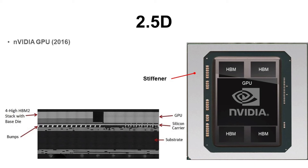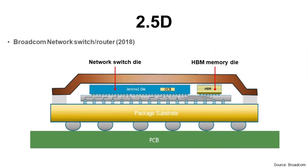A stiffener at the periphery is used to minimize package warpage. Another example is a Broadcom network switch in 2018. It integrated a network switch die and HBM memory on a silicon interposer. Typically, the silicon interposer is made by a foundry, and major players are TSMC, UMC, GlobalFoundries, etc.